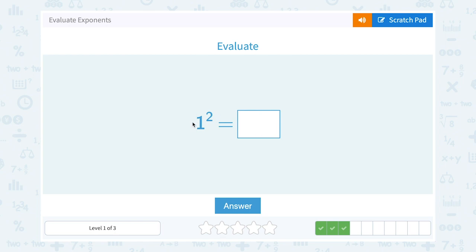One to the second power, or one squared. Well, this is telling us to multiply one out two times. So I would say one times one. Well, one times one just gives me one.